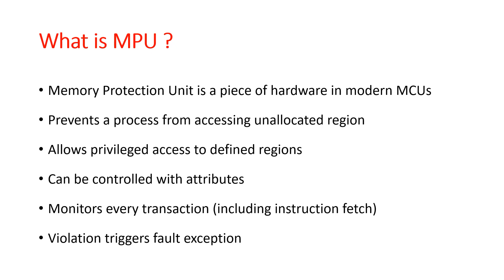The memory protection unit is a piece of hardware which is attached to the MCU itself. The main purpose of MPU is to prevent any process from accessing a memory location that hasn't been assigned to it. It does that by allowing privileged access for the process in the allocated location. Privileged access means the process can use all instructions and have access to all resources. The MPU monitors all transactions including instruction fetching, and any access violation will trigger a fault exception, which could result in unpredictable behavior or sometimes a hard fault.